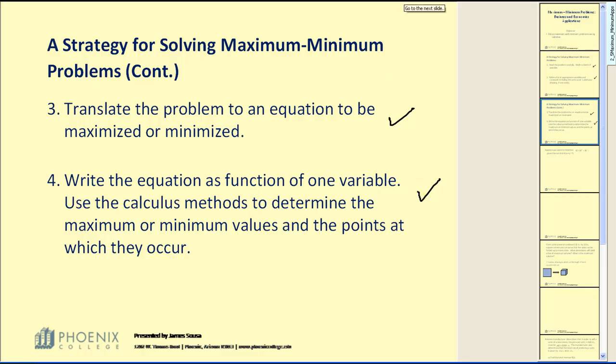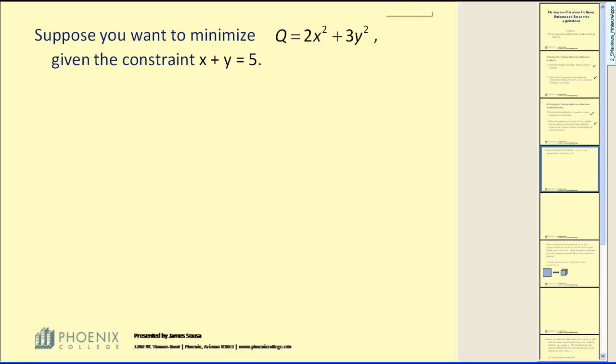Let's go ahead and take a look at an example. Suppose you want to minimize Q equals 2x squared plus 3y squared given the constraint that x plus y must equal 5. So we want to minimize Q equal to 2x squared plus 3y squared given that x plus y must equal 5.